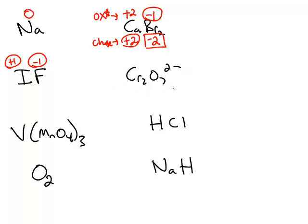In the dichromate anion, start by giving oxygen its normal value of negative 2. The charge of 7 of those oxygens is negative 14. This chemical has a negative 2 overall charge, so the chromium atoms together must contribute positive 12. Dividing by 2 chromium atoms gives each chromium an oxidation number of positive 6.